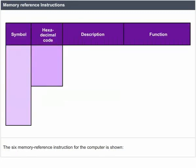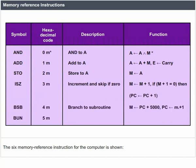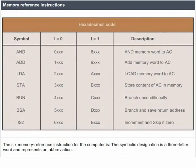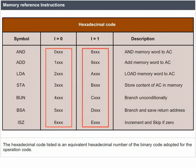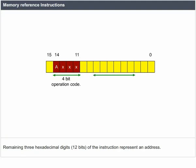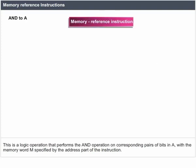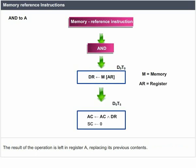There are 6 memory reference instructions for the computer. Each symbolic designation is a 3-letter abbreviation. The hexadecimal code is the equivalent of the binary operation code. A memory reference instruction uses 1 hexadecimal digit (4 bits) for the operation code and the remaining 3 hexadecimal digits (12 bits) for the address. AND to A: a logic operation that performs the AND operation on corresponding bit pairs in register A with the memory word M specified by the address part of the instruction; the result is left in register A.